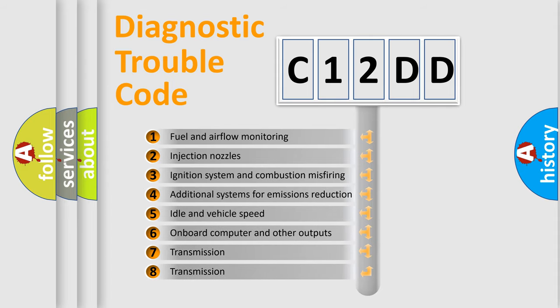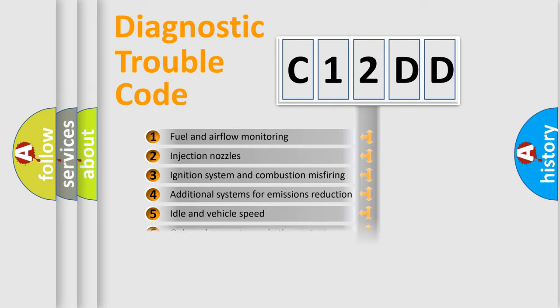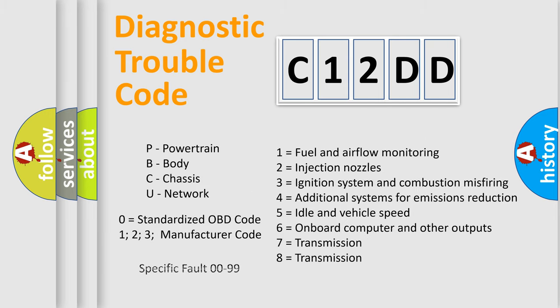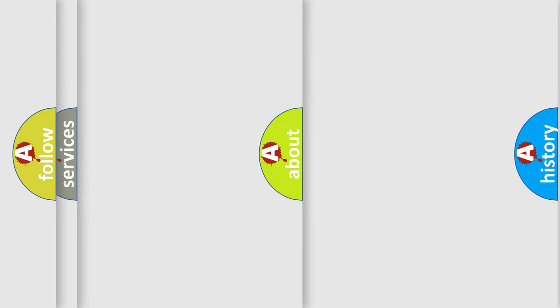The third character specifies a subset of errors. The distribution shown is valid only for the standardized DTC code. Only the last two characters define the specific fault of the group. Let's not forget that such a division is valid only if the second character code is expressed by the number zero.